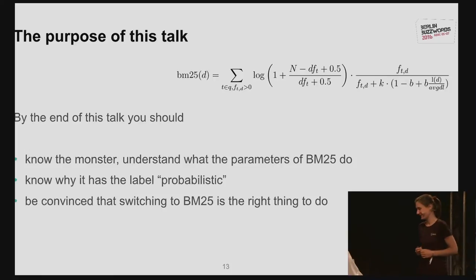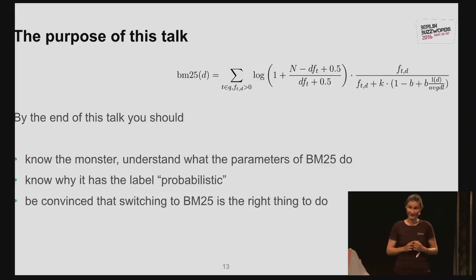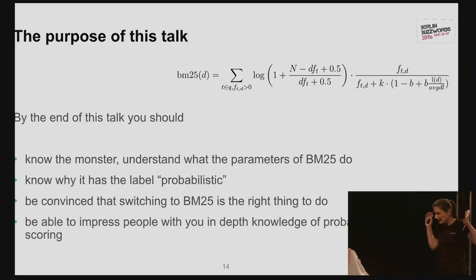What's the purpose of my talk? First, we're going to go through all the terms in the BM25 equation and I'll show you what they actually mean. In particular, what these parameters do in practice — what does it mean for your scoring. I'll also talk about why BM25 has the label 'probabilistic,' which is mainly for your entertainment so you can show off later. And I hope to convince you that switching to BM25 is the right thing to do.